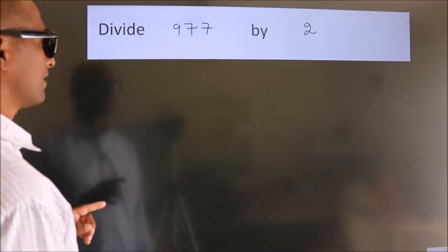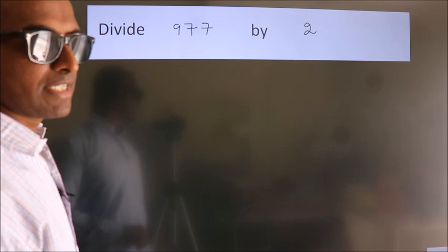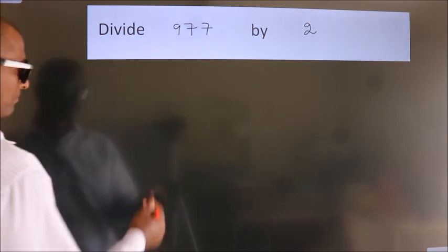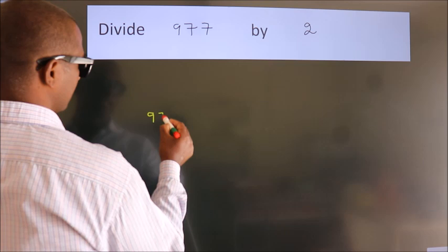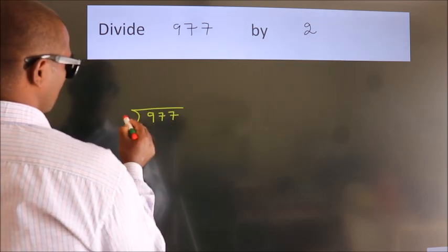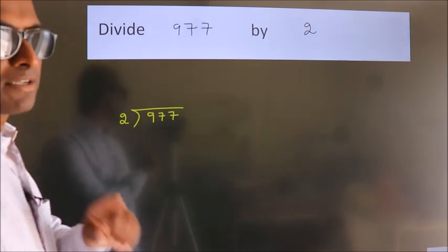Divide 977 by 2. To do this division, we should frame it in this way. 977 here, 2 here. This is your step 1.